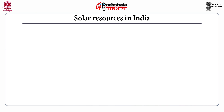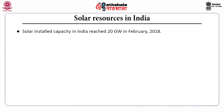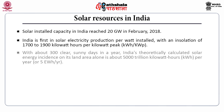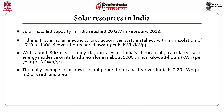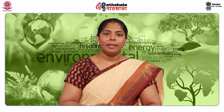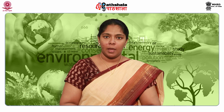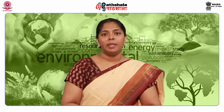India's solar installed capacity reached 20 gigawatts in February 2018. India ranked number one in solar electricity production per watt installed, with insulation of 1,700 to 1,900 kilowatt hours per kilowatt peak. With about 300 clear sunny days per year, India's theoretically calculated solar energy incidence on its land area alone is about 5,000 trillion kilowatt hours per year. The Indian government has supported solar expansion through various plans and missions, and solar products have increasingly helped meet rural energy demands.